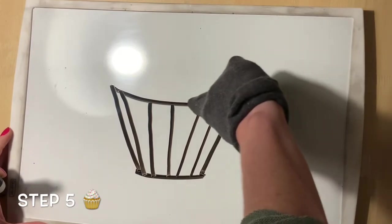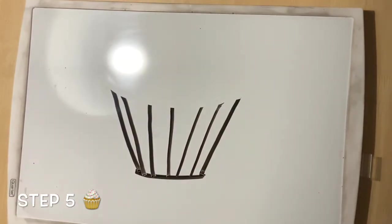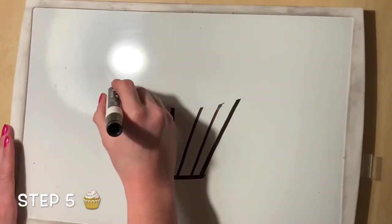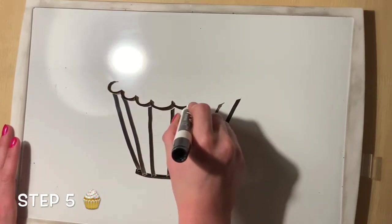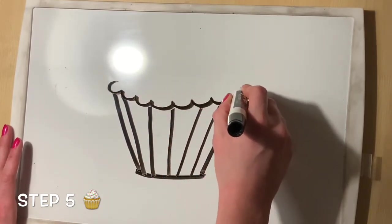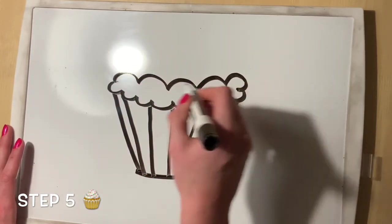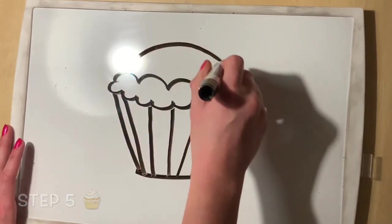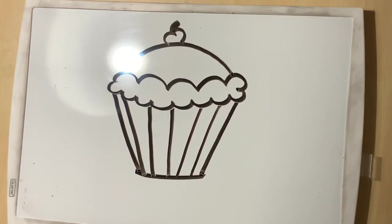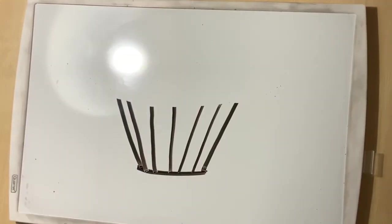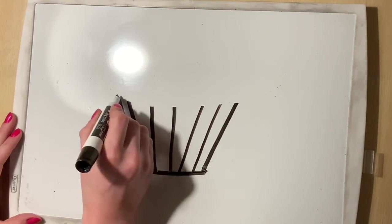Step five is to add the frosting on top. There are two different ways to do this. Way number one, draw a cloud at the top of your cupcake holder and then a rainbow at the very top. Then you can add any other decorations that you would like to your cupcake.